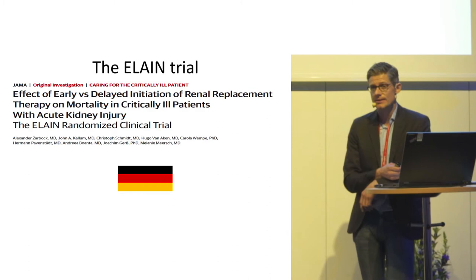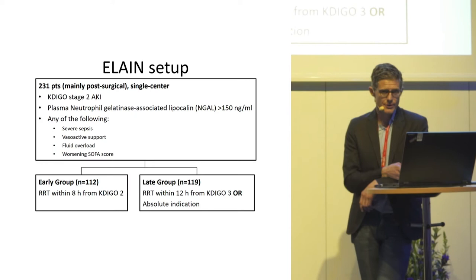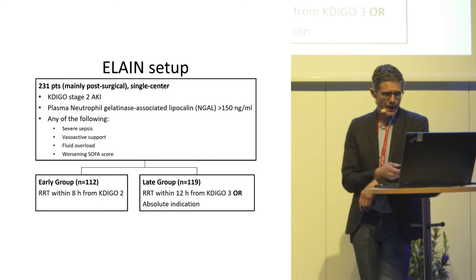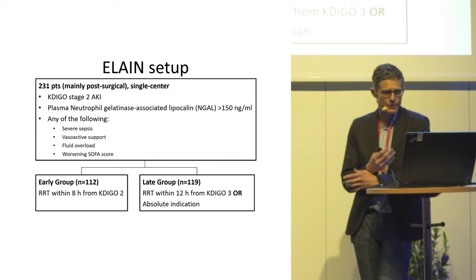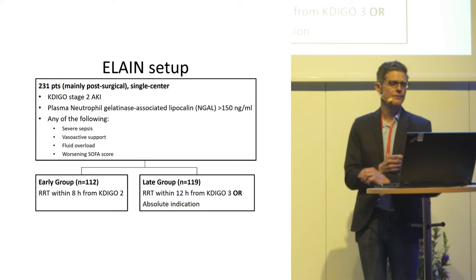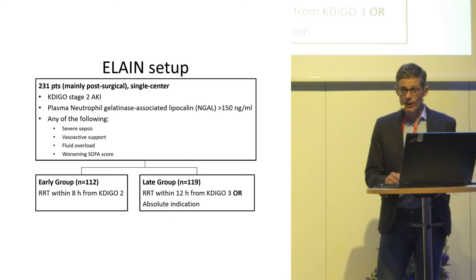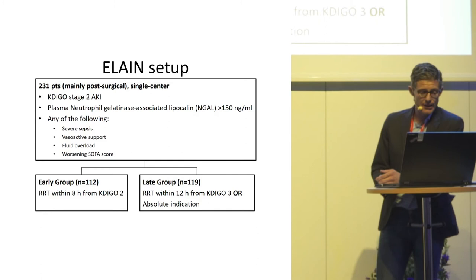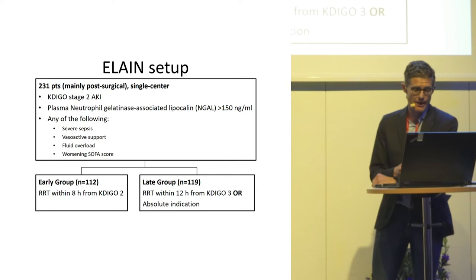The ELAIN trial is a single-center German study published in JAMA, also in 2016. They randomized 230 patients, mainly post-surgical, with KDIGO stage 2, an elevated NGAL level — a proposed biomarker of acute kidney injury — and severe sepsis, vasopressor support, fluid overload, or worsening SOFA score. The aim in the early group was to start RRT within eight hours from randomization; in the late group, RRT was delayed until the patient developed KDIGO stage 3 or an absolute indication.